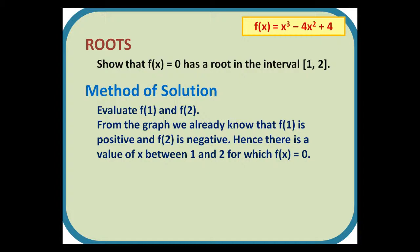To answer this question, we need to find the values of f(1) and f(2). From the graph, we already know that f(1) is positive and f(2) is negative. Hence there is a value of x between 1 and 2 for which f(x) equals 0.